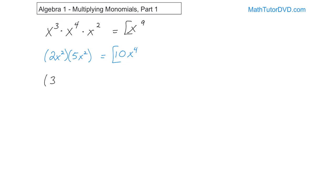What if you had 3 times t times 4 times t? You're multiplying two terms together. You have numbers, so 3 times 4 gives you 12. Then you have t to the first power and another t to the first power — remember, when we have a first power, we don't write the 1, it's always known. So 1 plus 1 gives you 2, and the bases are the same, so it's t to the second power. That's the final answer.